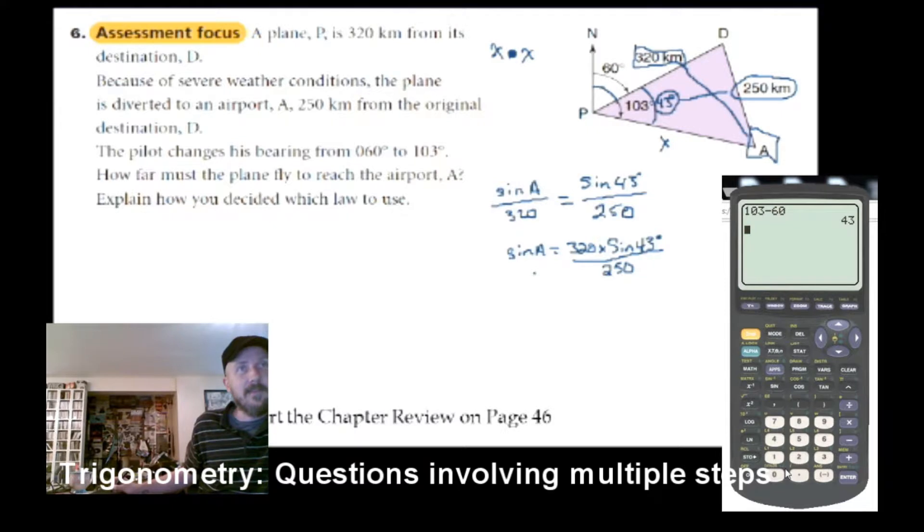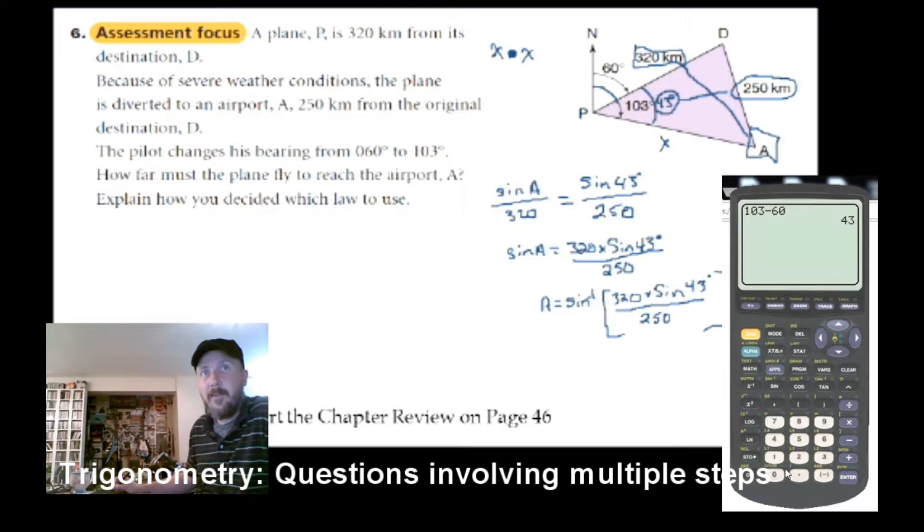So we got this. Now we still don't have A by itself. So we want to bring that word sine to the other side. So it becomes, remember, sine inverse of all this junk here. All this stuff is with that sine inverse. Kind of went behind my calculator there. Anyways, that's a big bracket. There we go. Now, so A is equal to, and this is angle A here that we're finding.